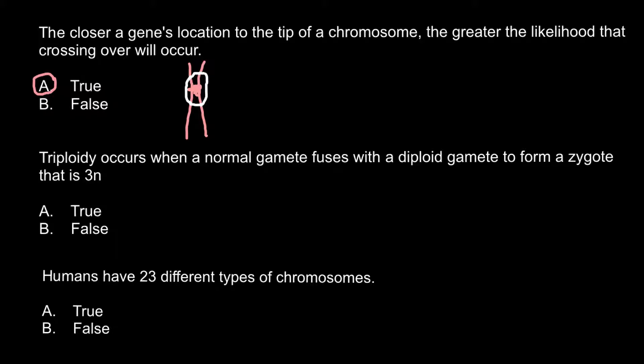Crossing over can happen anywhere in other places on the chromosome. For example, this may happen here, and these two fragments would change places. So this one would take place here and another would take place on the other chromosome. But also this may happen at a different region.